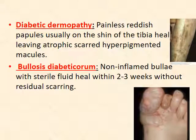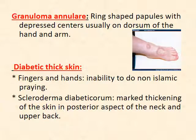Diabetic dermopathy, or spotted leg syndrome, begins as reddish lesions that become brown and hyperpigmented due to atrophic skin. Bullosis diabeticorum presents as non-inflamed blisters with sterile fluid, healing within 2-3 weeks without residual scars. Granuloma annulare presents as papules with ring shapes, usually on the dorsum of the hands and arms. Diabetic thick skin occurs in the fingers and hands, leading to limited joint mobility. Scleredema appears as thickening in the neck and upper back.